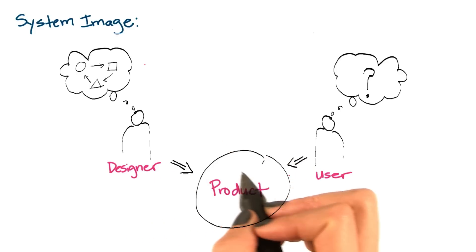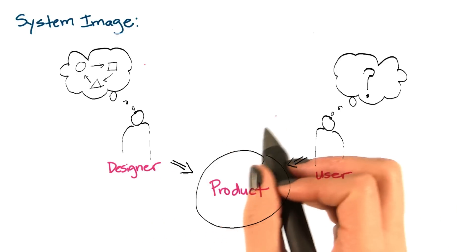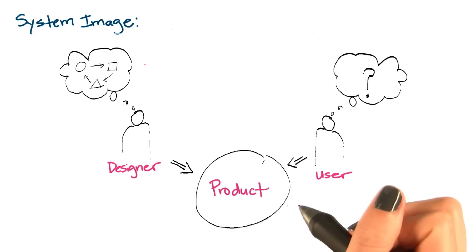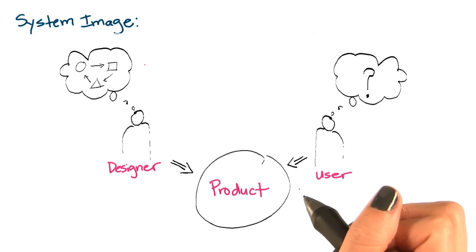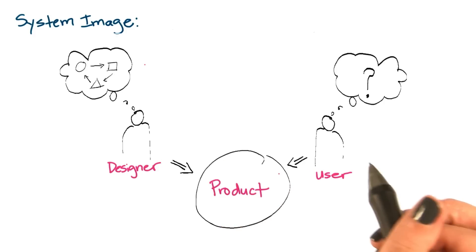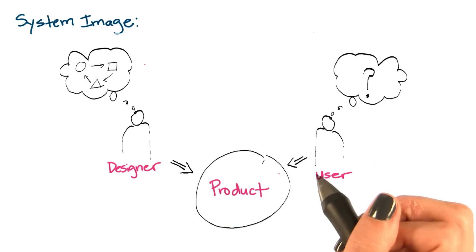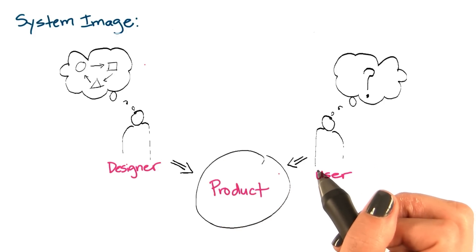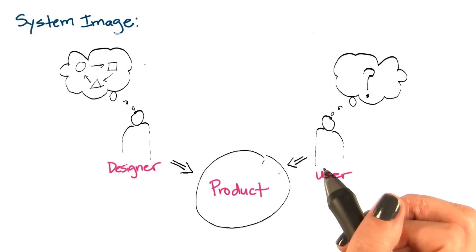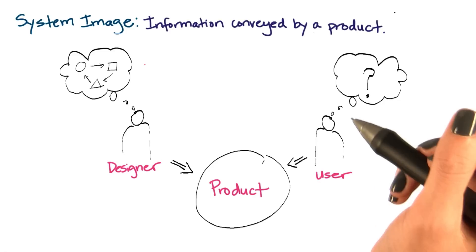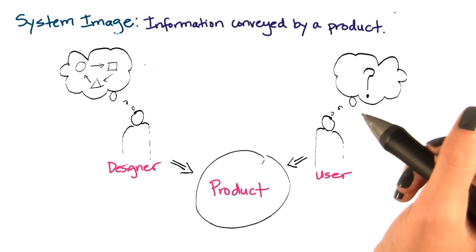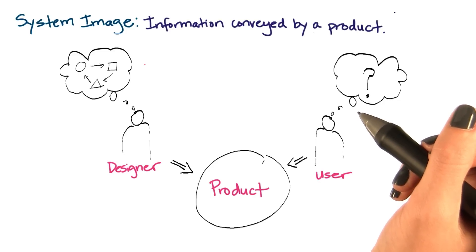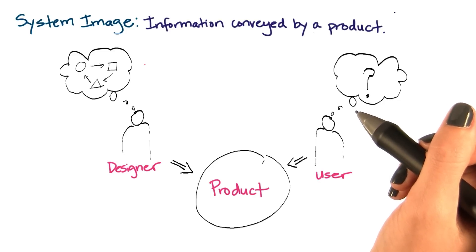So we rely on whatever information we can find out about the product — from its shape, form, signifiers, affordances, and even instruction manuals. This information combined is what we call the system image.